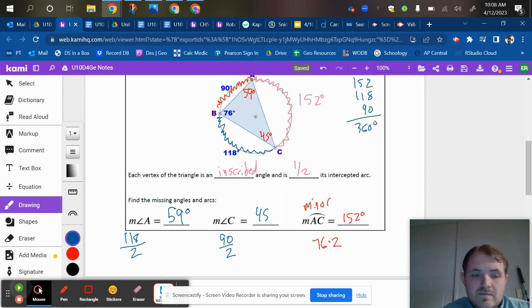And I'm actually going to slide that over there. When you go from angle, a known angle to an arc, you multiply by two, specifically the inscribed angle, you multiply by two.